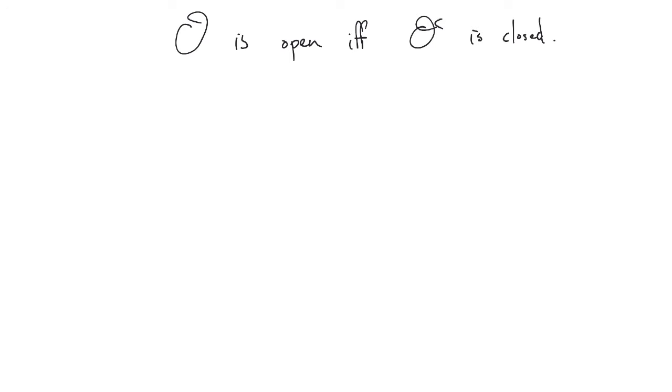At the very end, last time we talked about the fact, we were talking about the relationship between open and closed, right? Open is not the opposite of closed, but the two concepts are complementary in the sense that if O is an open set, then the complement is closed. And this is if and only if, it means if the complement is closed and the original set must have been open.